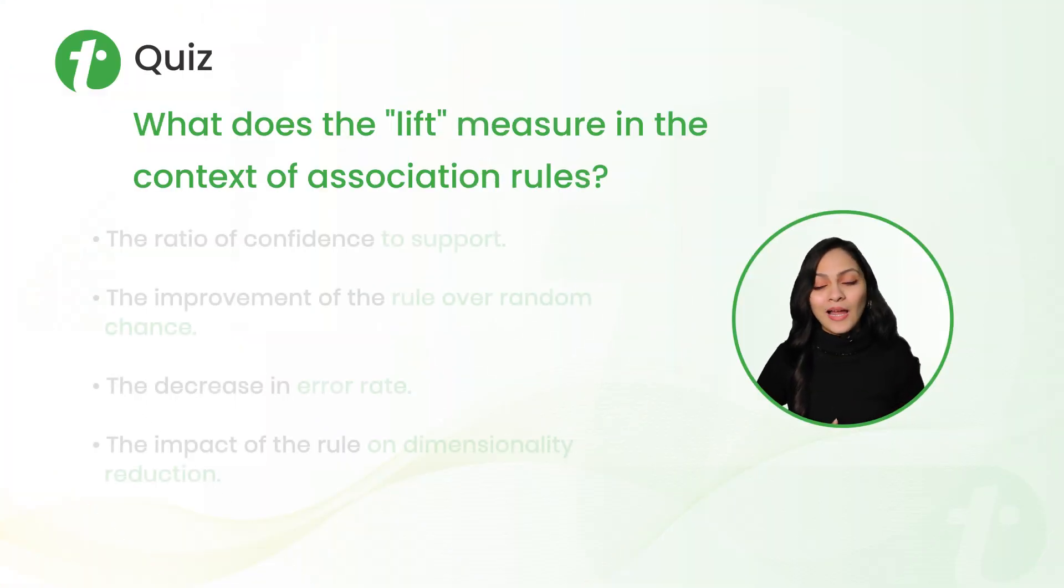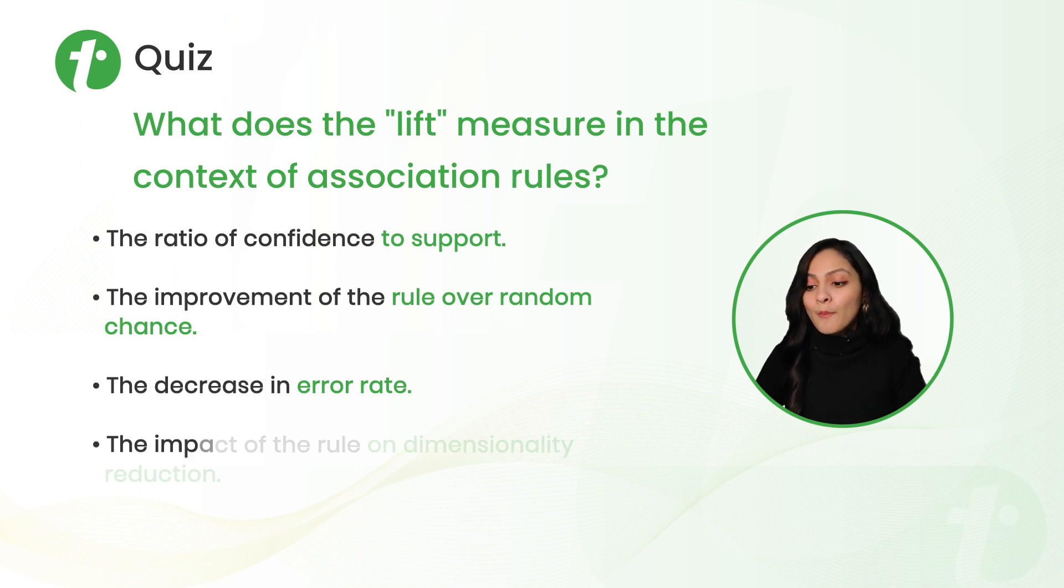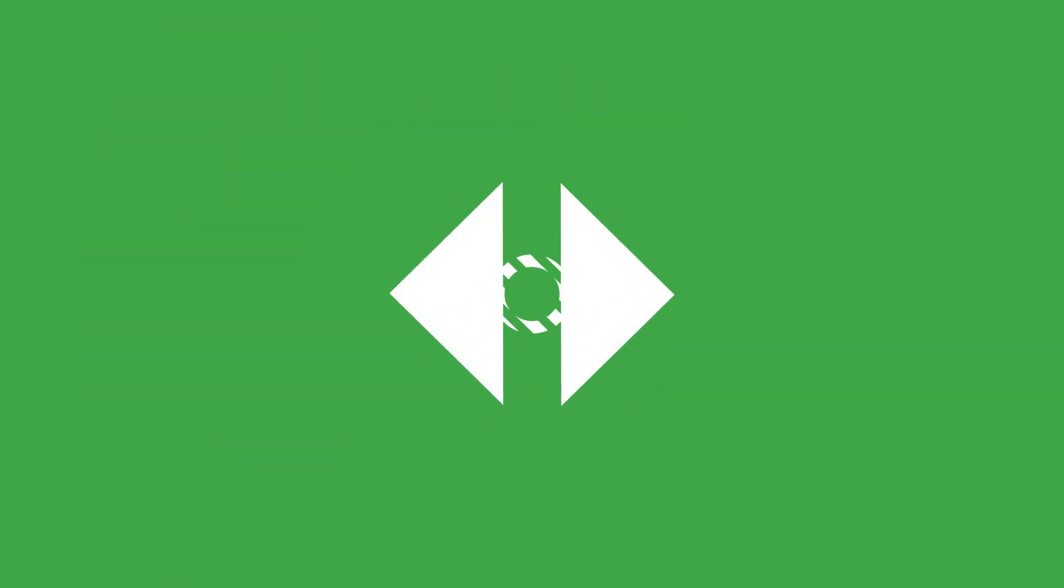Now here is a quiz for you all. The question is, what does lift measure in the context of association rule? The options are: the ratio of confidence to support, the improvement of the rule over random chance, the decrease in error rate, and the last option is the impact of rule on dimensionality reduction. If you know the answer, please write down that in the comment section.